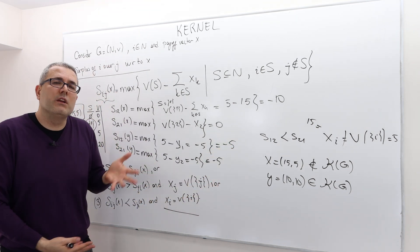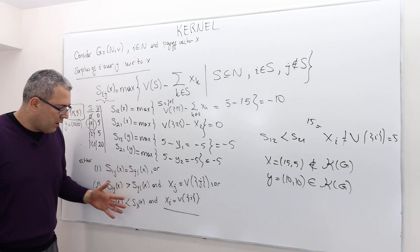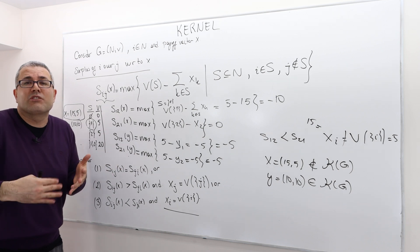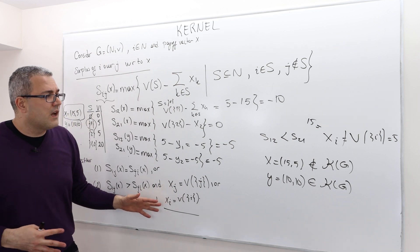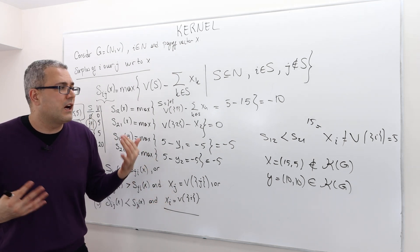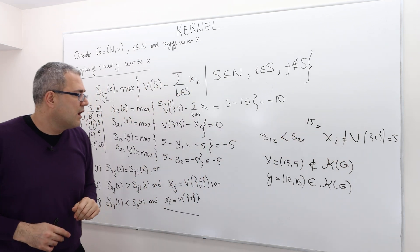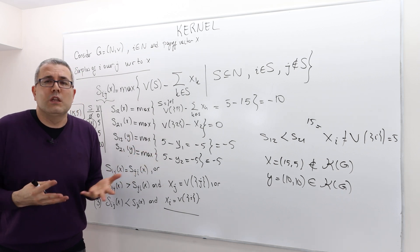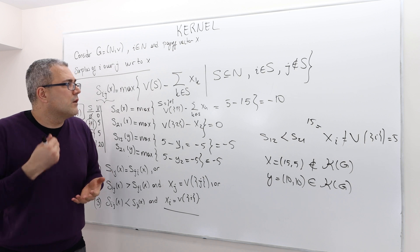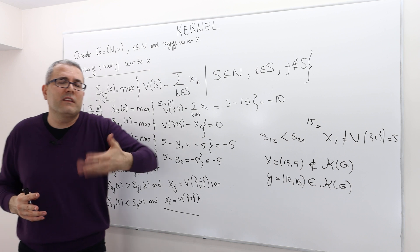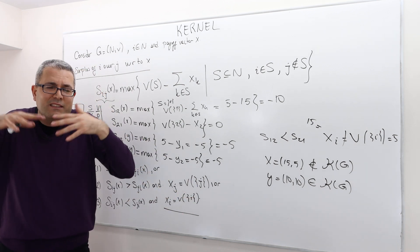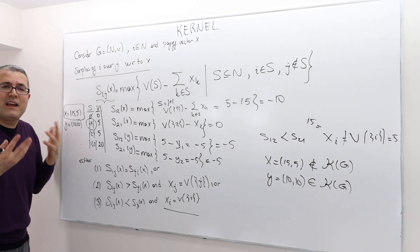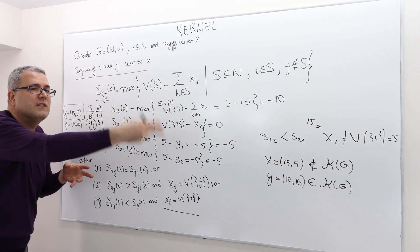Player two can threaten player one saying: you're getting 15 in this grand coalition, but I can break this and play alone — it's the same for me, but you're going to lose a lot, so I won't accept that. In that sense, 15-5 is not an optimal solution and is not selected in the kernel. For y = (10, 10), if either player breaks the grand coalition, they both lose exactly the same amount, so their bargaining powers are the same. That threat is pointless, and so y makes sense and is in the kernel.